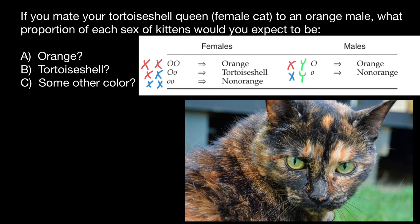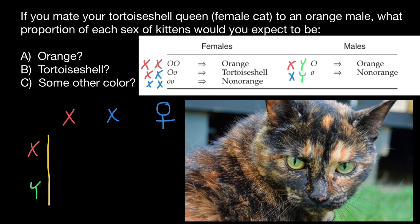Now that we know this, let's solve the problem. If you mate your tortoiseshell queen — that means this genotype — let's use my notation: one X chromosome with an active allele and another X chromosome with an inactive allele. This is the female side. Let's build a Punnett square and cross with an orange male, whose genotype is an active X chromosome and a Y chromosome.